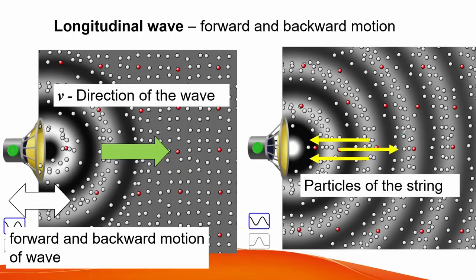The next type of wave is the longitudinal wave. The motion of oscillation of this wave is forward and backward motion. The wave direction is parallel to the motion of the oscillator. More specifically, the wave moves radially outward from the source. We see that the particles on the plane also move in a forward and backward motion, like air molecules vibrating in space due to sound produced by a speaker.